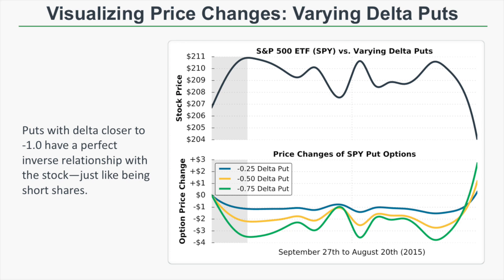Put options with deltas closer to negative 1 represent positions similar to shorting 100 shares of stock per contract. If you're short 100 shares and the stock decreases by $1, your profit is $100. Similarly, if you own a put option with a Delta of negative 1, that put's price is expected to increase by $1 when the stock decreases by $1 — also generating $100 profit. So put options with deltas near negative 1 act just like short stock positions.